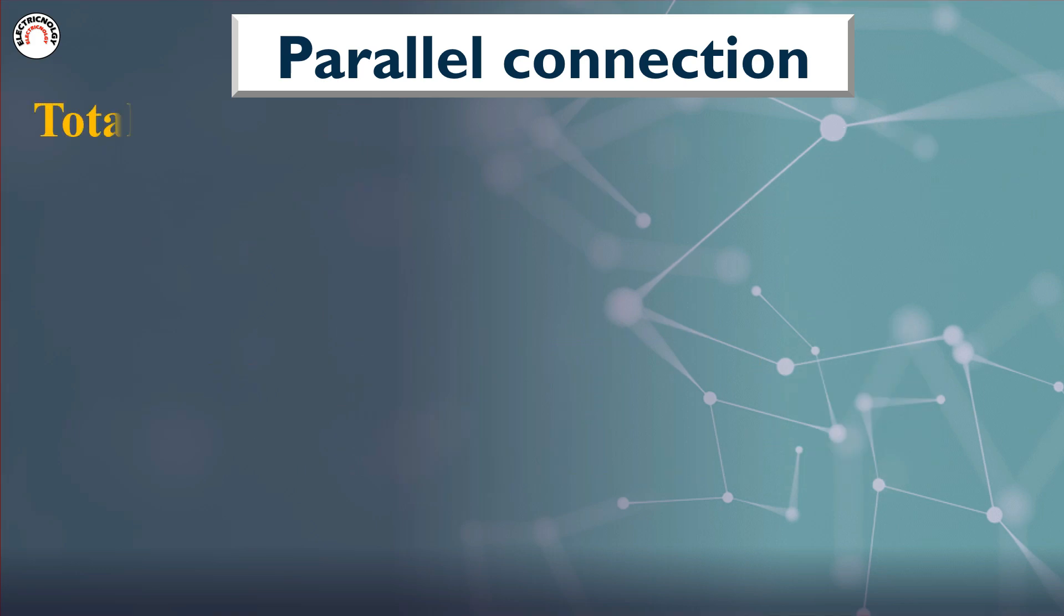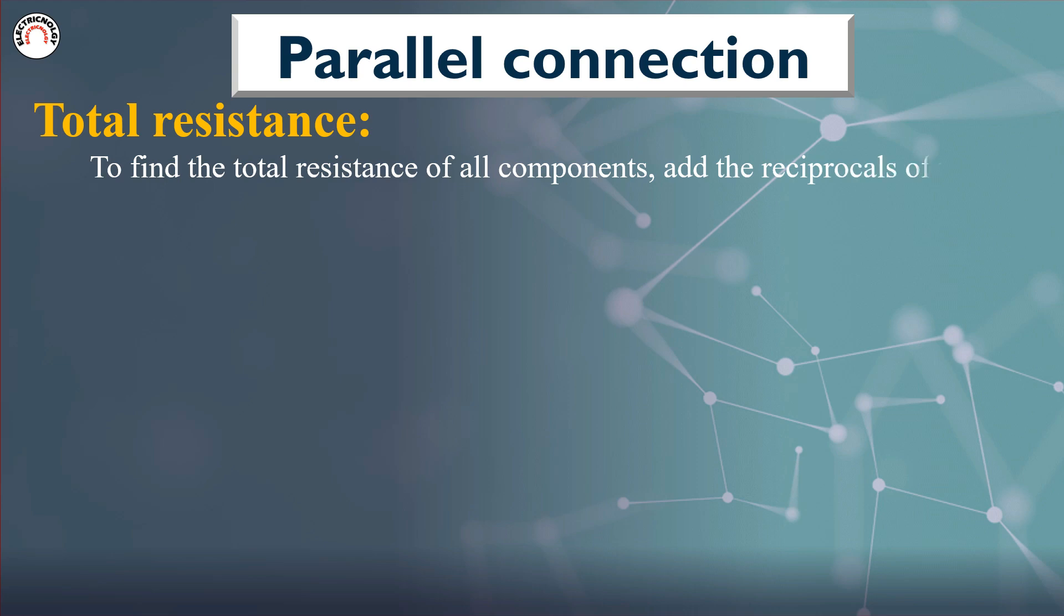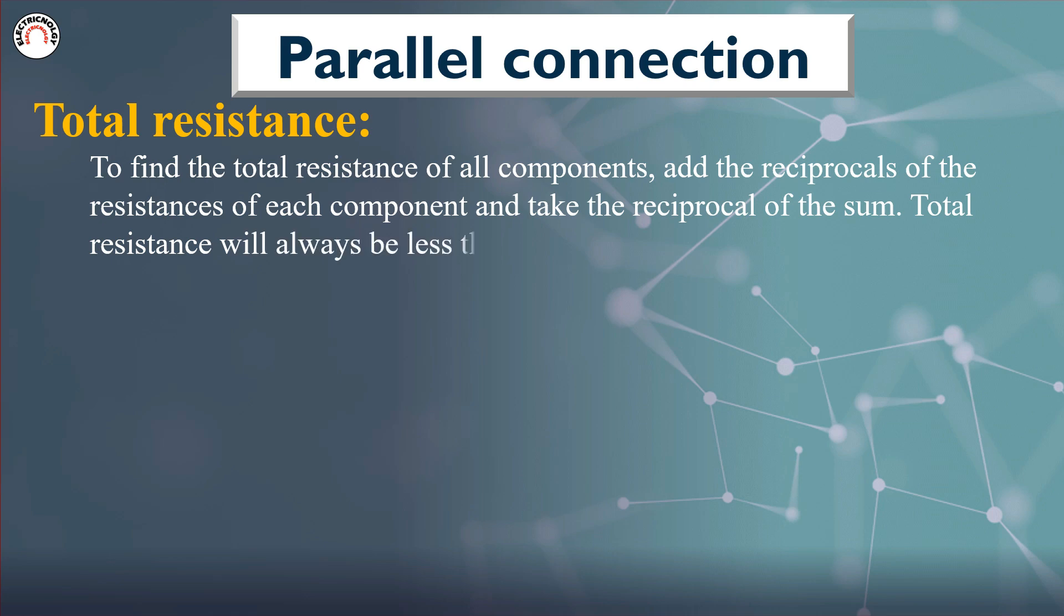Total Resistance: To find the total resistance of all components, add the reciprocals of the resistances of each component and take the reciprocal of the sum. Total resistance will always be less than the value of the smallest resistance.